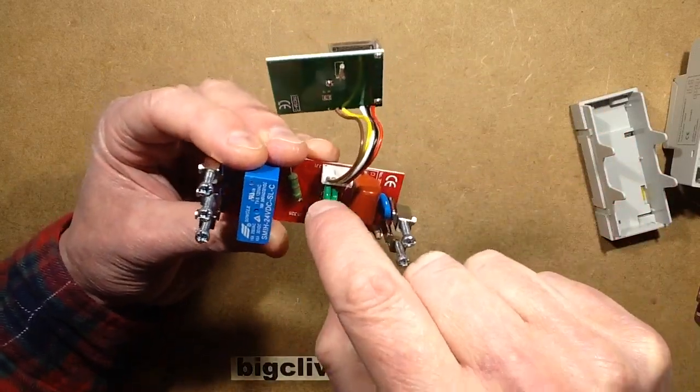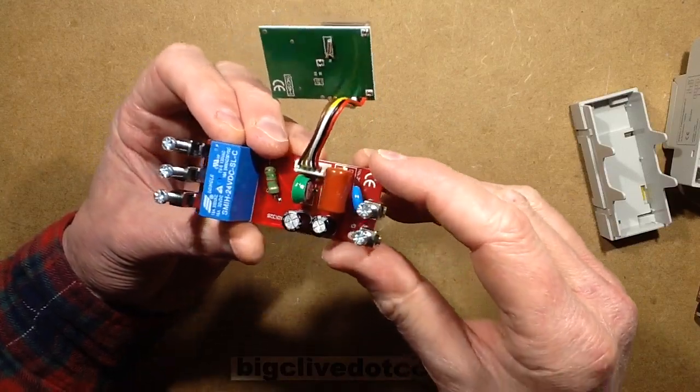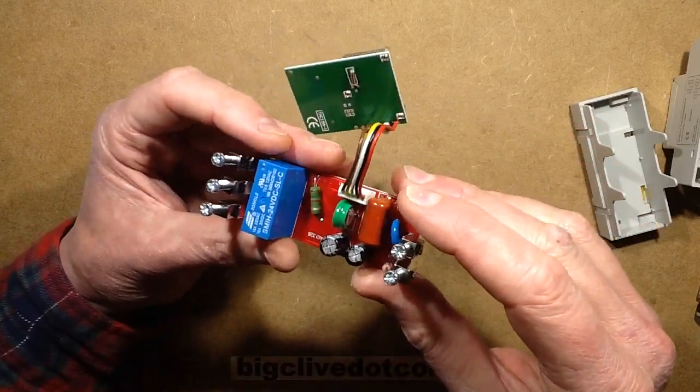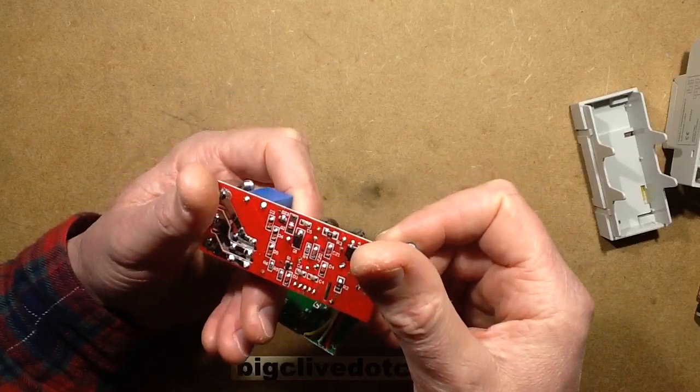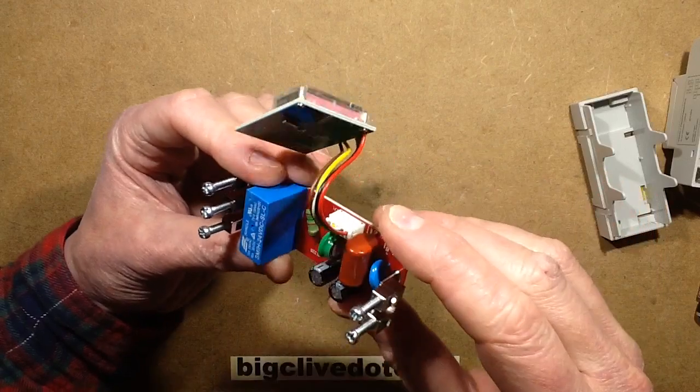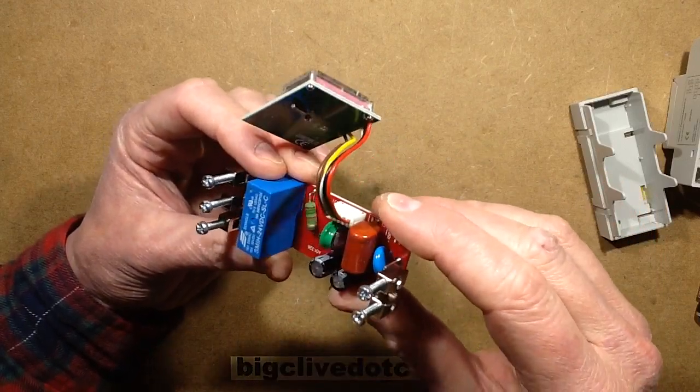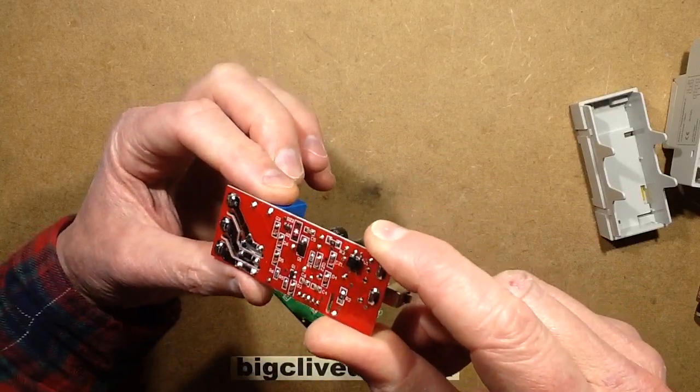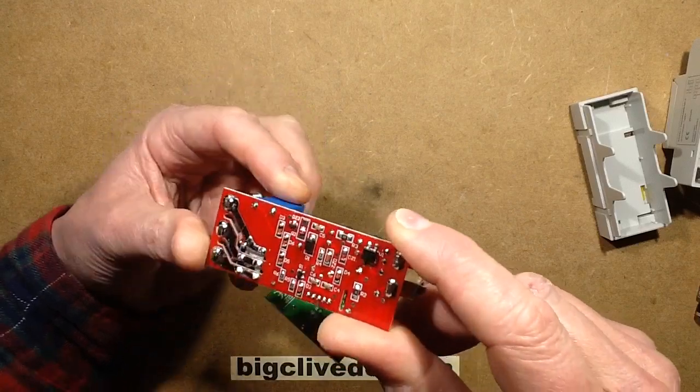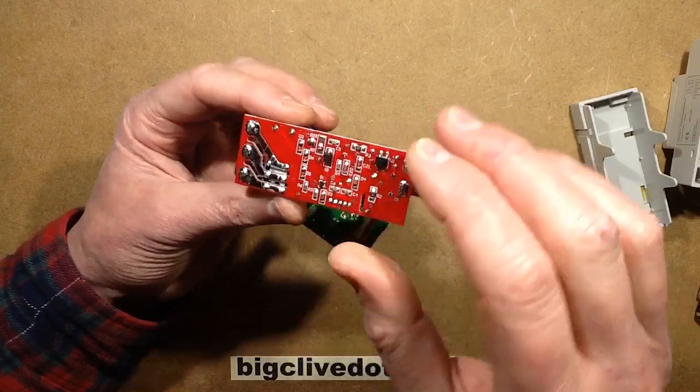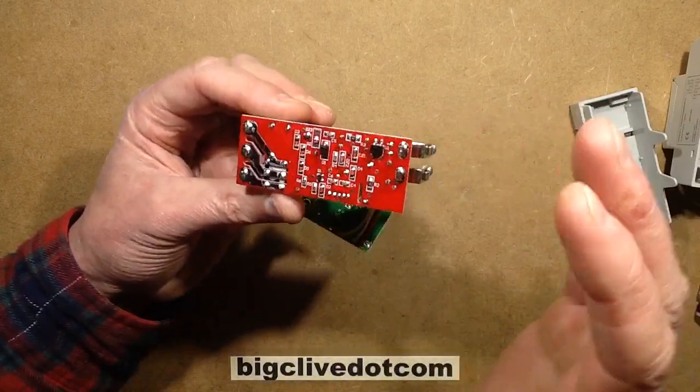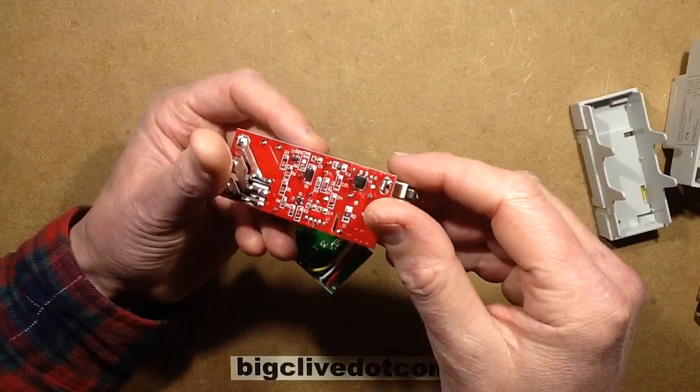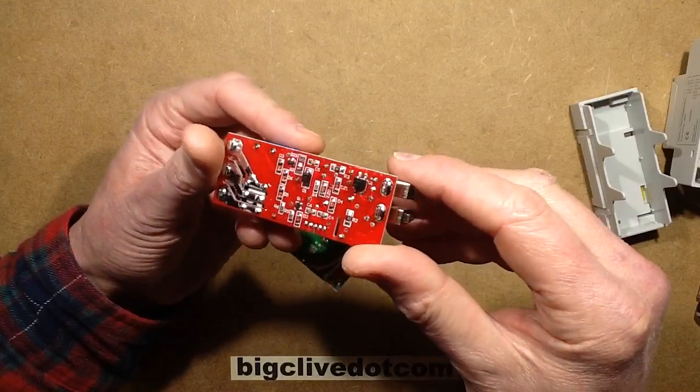There's the backup battery there, just a standard little nickel metal hydride type cell which looks very similar to the type found in the little solar garden lights. There's plenty of anti-tracking slots, those ones most notably there but there's also one here to separate from the mains side to the reduced voltage. The spacing all looks pretty good. The quality of construction looks decent.